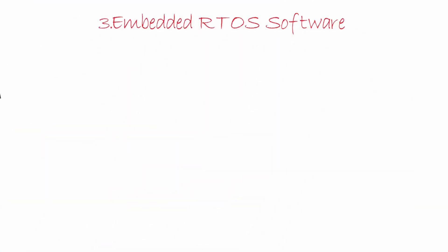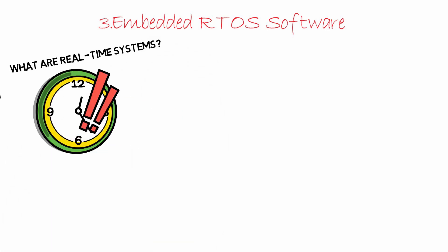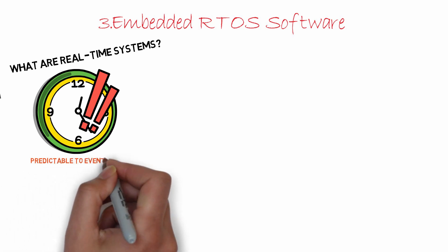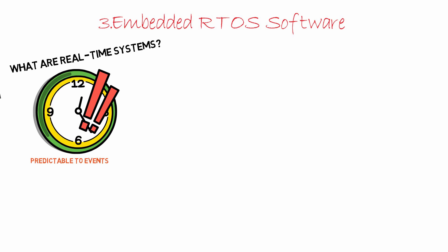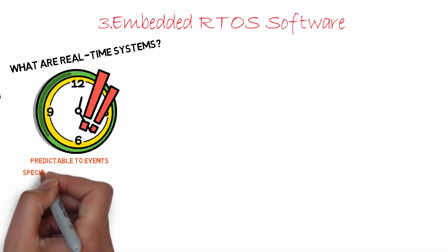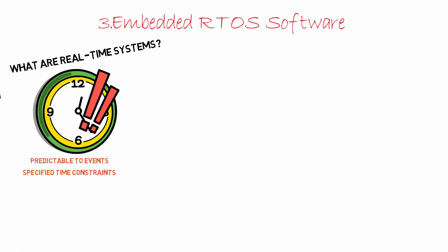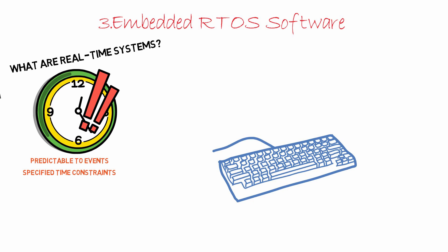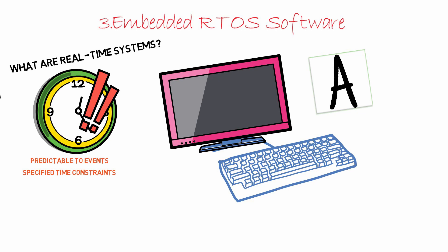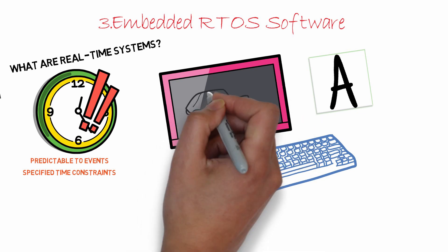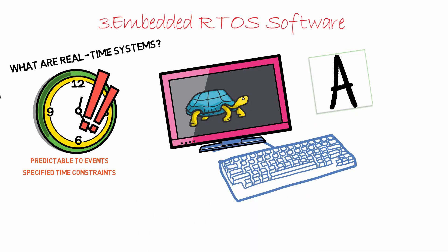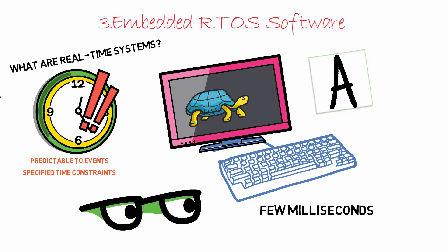RTOS software: What are real-time systems? Real-time systems act predictably to events — their main characteristic is that they will react to an event within a specified time constraint. A simple example is your computer keyboard: when you are typing, you expect the letter to appear on the screen as soon as you press it. If the word appears with even a two-second delay, it is going to be a bad experience. The time constraint here is a few milliseconds, which cannot be perceived by normal human senses, so the end user feels like the letter magically appeared on the screen.